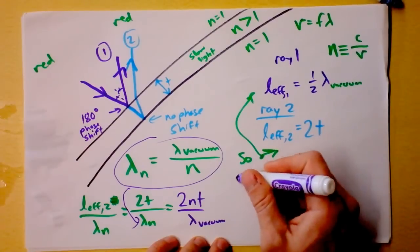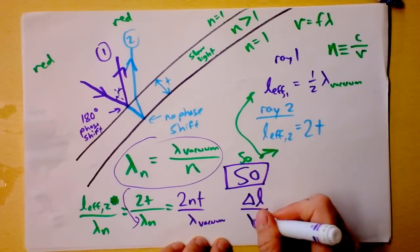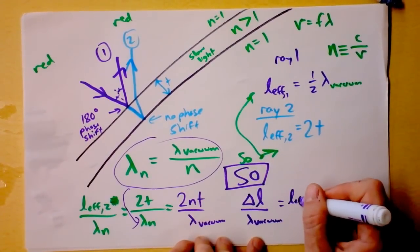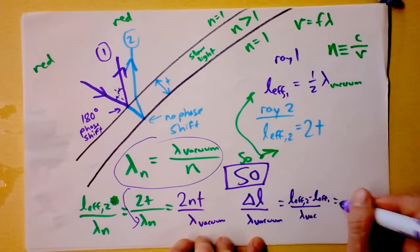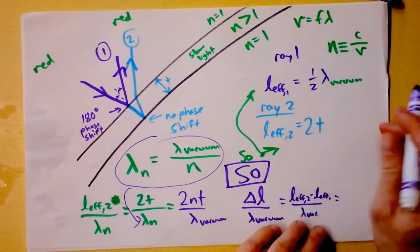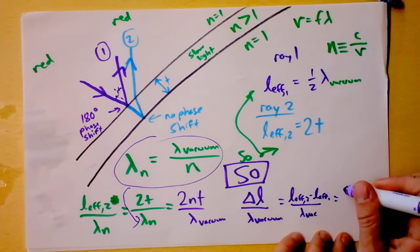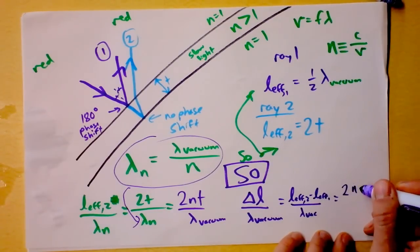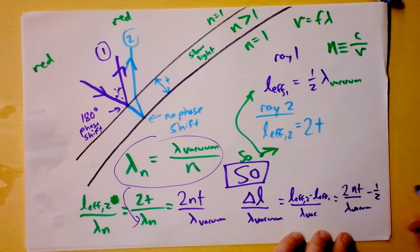So let's look at what the path length is. So I'm going to say, so one final time, the path length difference divided by lambda in a vacuum is, well, that's going to be L effective 2 minus L effective 1 divided by lambda in a vacuum. And it's time for me to plug in some stuff. I'm going to get, wait a second, L effective 2. That's this stuff divided by the lambda in a vacuum. Oh, it's already there. Okay, great. So I'm going to say that this is 2 times n times t divided by lambda vacuum. And then I have to subtract a half.